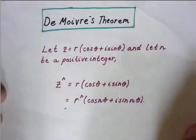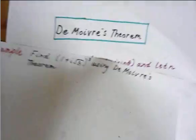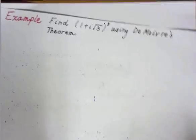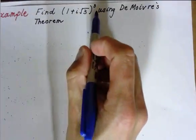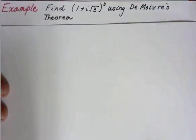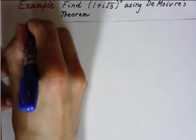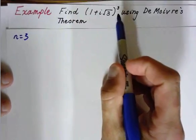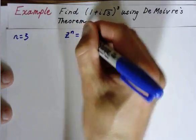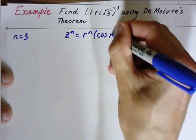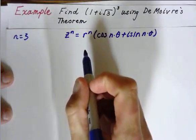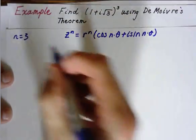Let's look at one example using De Moivre's Theorem. We are going to find (1 + i√3) cubed using De Moivre's Theorem. We're going to know that n is 3 — it's the power. So what we're going to do first, if we want to use De Moivre's Theorem, that z to the n equals r to the n times cosine(nθ) plus i·sine(nθ), we need to know r, we need to know n, and we need to know theta. n is 3.